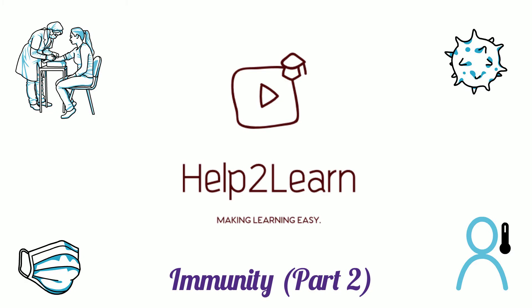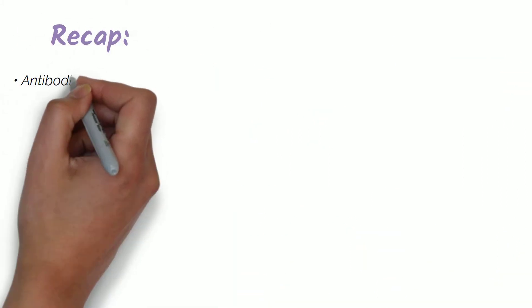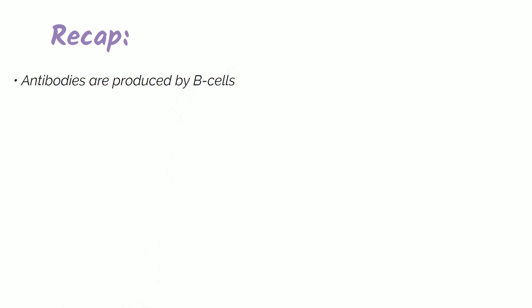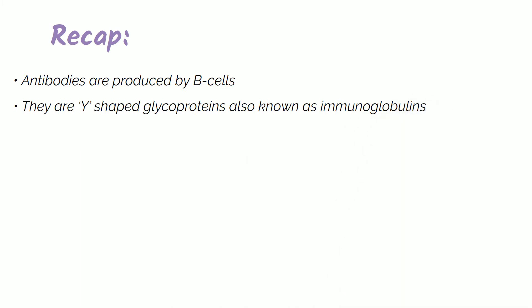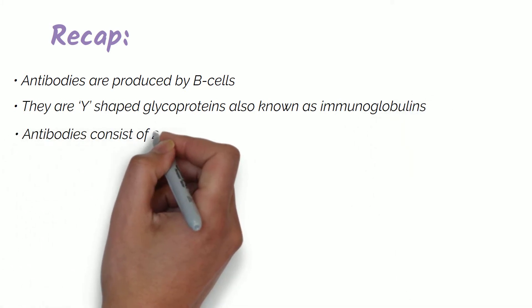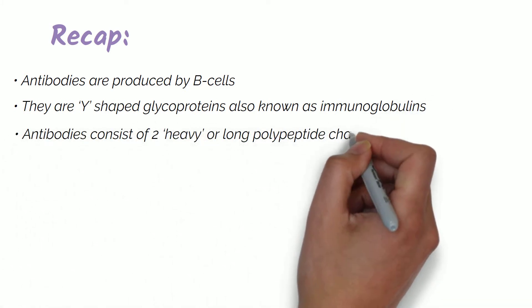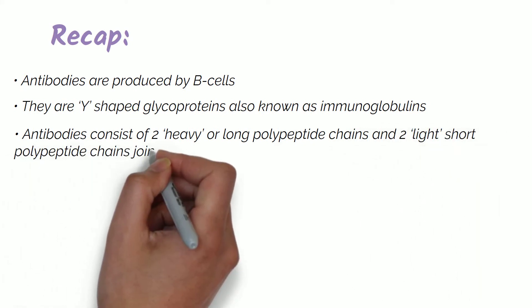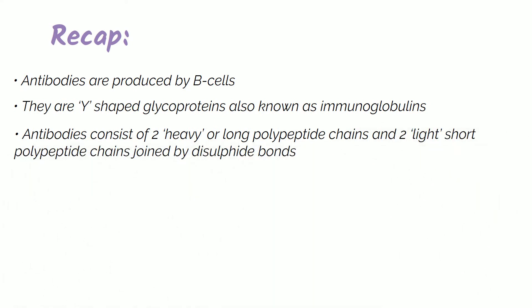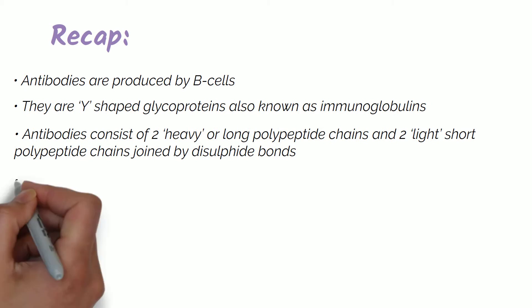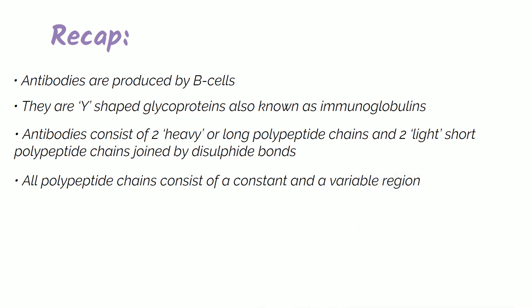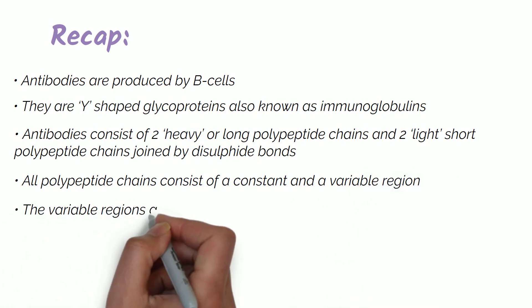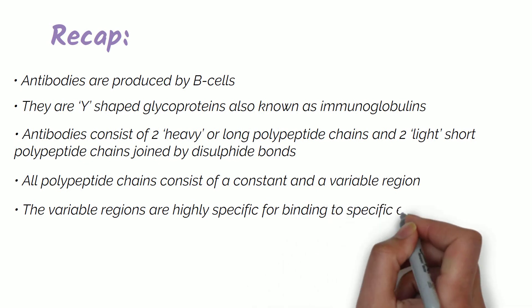As we covered antibodies in the previous video, here is a brief recap. Antibodies are produced by B-cells. They are Y-shaped glycoproteins, also known as immunoglobulins. Antibodies consist of two heavy or long polypeptide chains and two light or short polypeptide chains joined by disulfide bonds. All polypeptide chains consist of a constant and variable region.